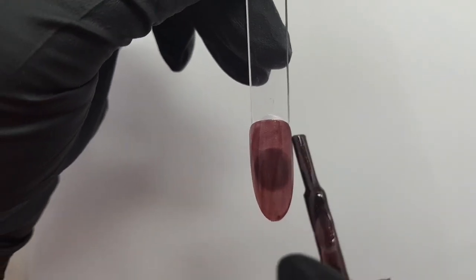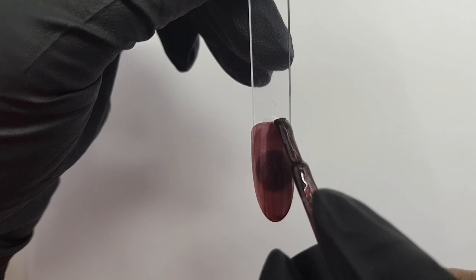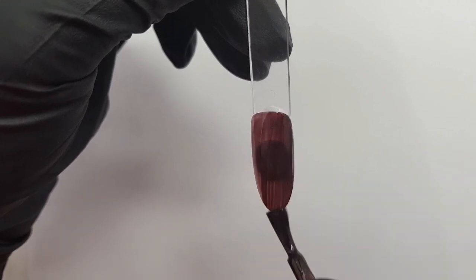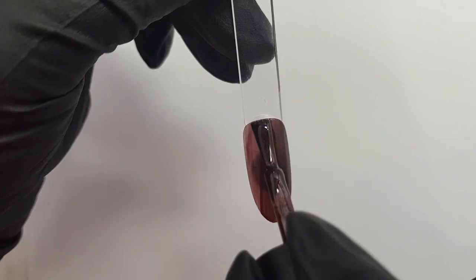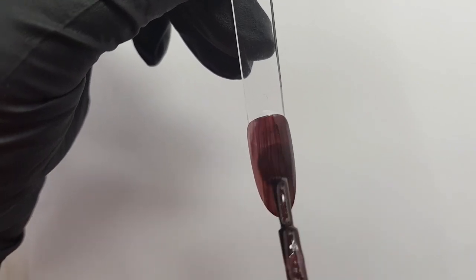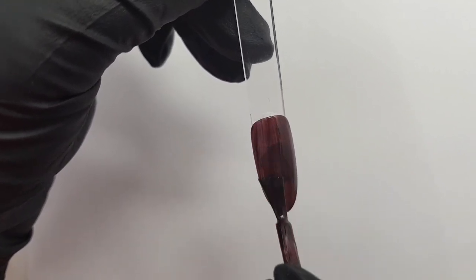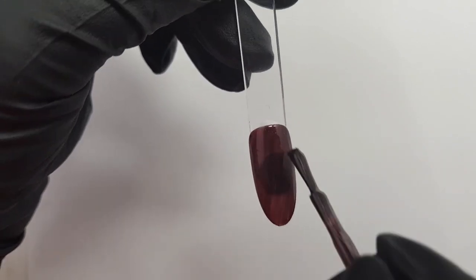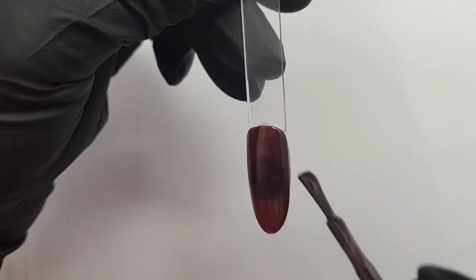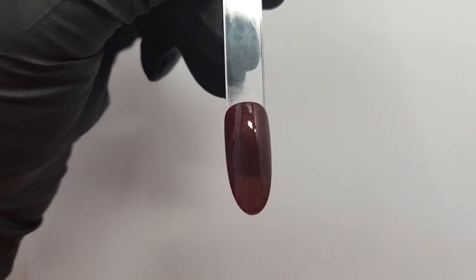Once this has been done, we apply our second layer of color. Again, make sure that you have a nice even application. Make sure all of the free edges are nicely capped, especially when doing this on real nails, because you want to prevent peeling away of the product. So this has been applied nice and thinly, and now it can go into the lamp to harden out.